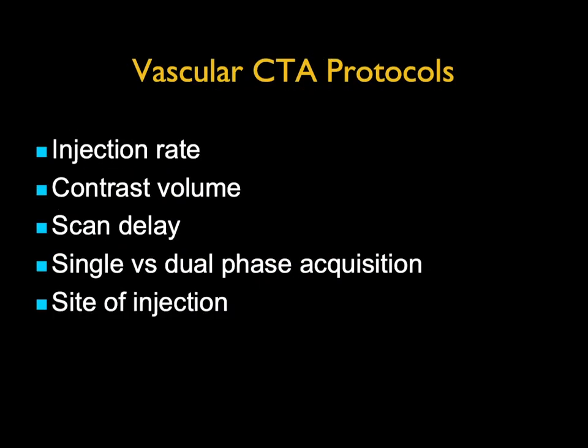When we look at patients with aortic aneurysms or follow-up post-repair, protocols become very critical. For injection rate, we like 5 cc/s with anywhere between 100 and 120 cc's of contrast — Omni 350, or Visipaque 320 for patients with borderline renal function. Scan delay will depend on the area being scanned, how distal you need to be, and how old the patient is. You can do it with triggering — there are a number of different ways.